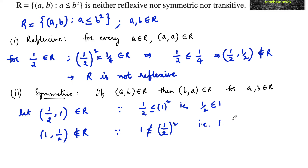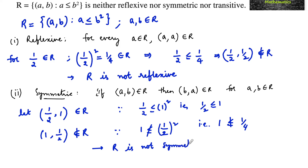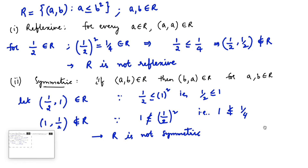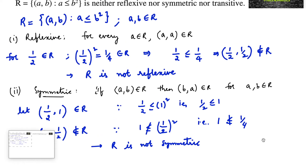That is, 1 is not less than or equal to 1/4. For 1/2 and 1, which are real numbers, (1/2, 1) belongs to the relation but (1, 1/2) does not satisfy the condition, and hence we can say this relation R is not symmetric. If at least one such example can be shown, we can conclude the relation is not symmetric.